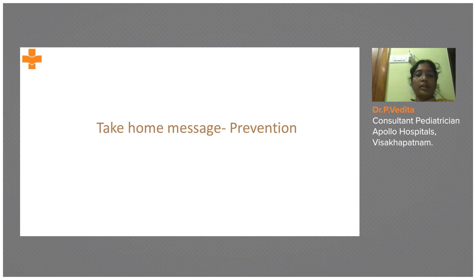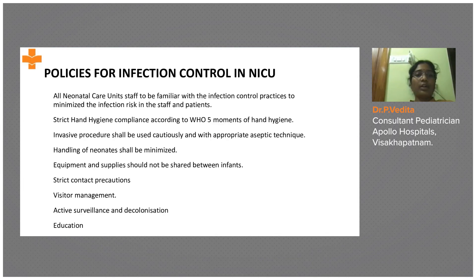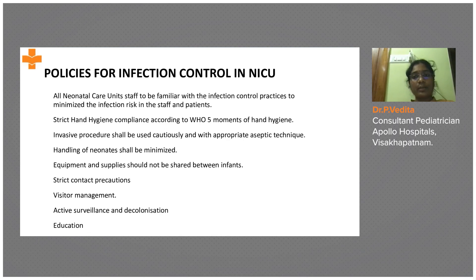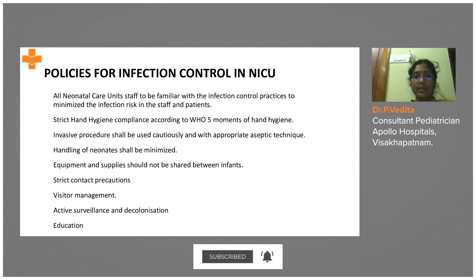The take-home message is: prevention is the key for Staphylococcus aureus. All ICU staff should be familiar with infection control programs to minimize infection risk. Strict hand hygiene and the five moments of hand hygiene are essential: before touching the patient, after touching the patient, before any aseptic procedure, after touching the patient's surroundings, and after touching any infectious fluids, drains, or materials.